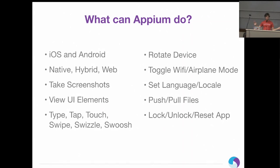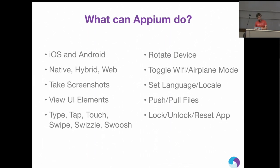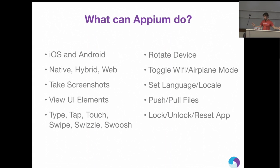But Appium does all this for you and allows you to write your tests in your editor and run them just through the command line, which means you can run them easily on CI systems for continuous integration — it's really easy to put it into Jenkins. So a brief overview of what Appium can do: it works on iOS and Android, on native, hybrid, and mobile web, which means you can automate Chrome or Safari.